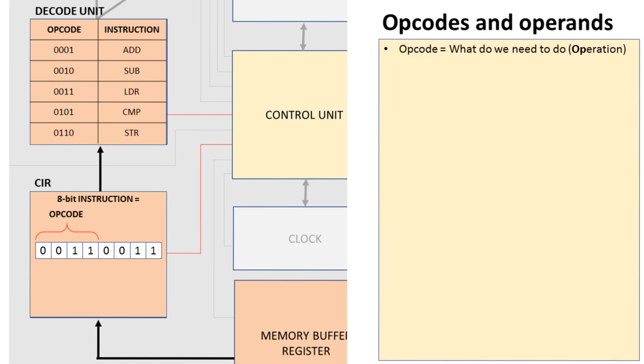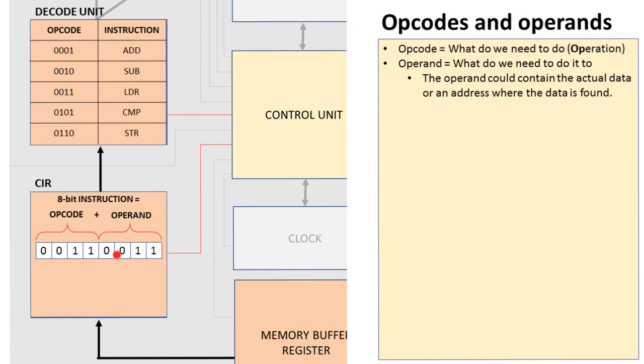And we can see the opcode is the first 4 bits. And the opcode tells the CPU what to do. Op standing for operation. So this is the operation code, what we need to do. The rest of the instruction is the operand. That's what do we need to do it to.